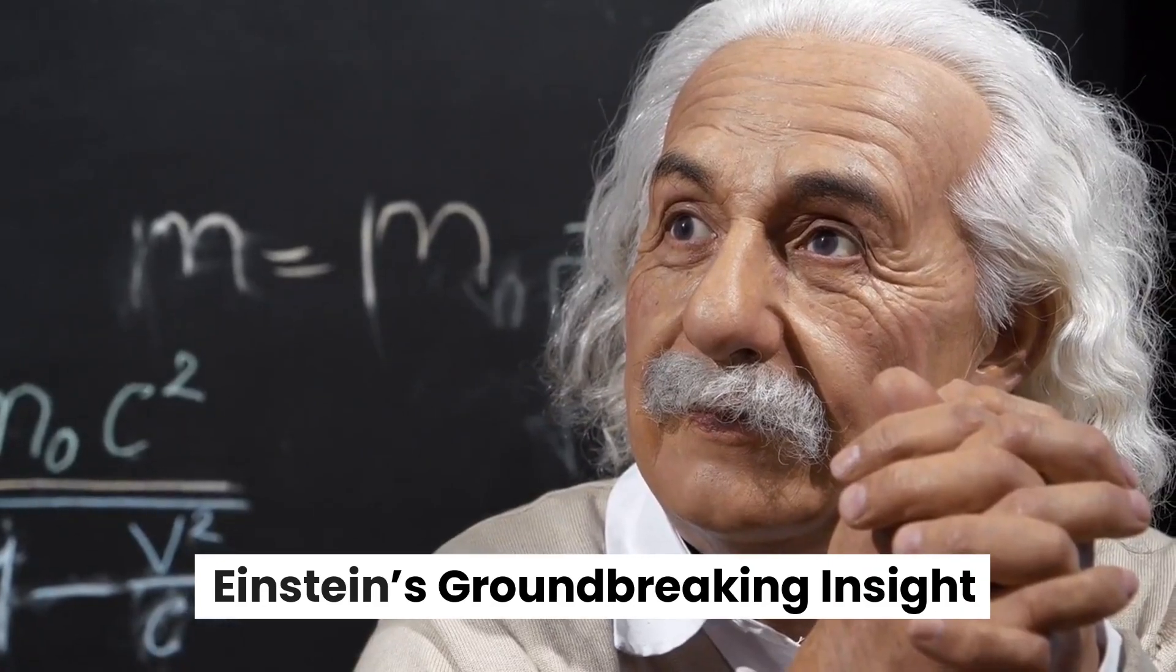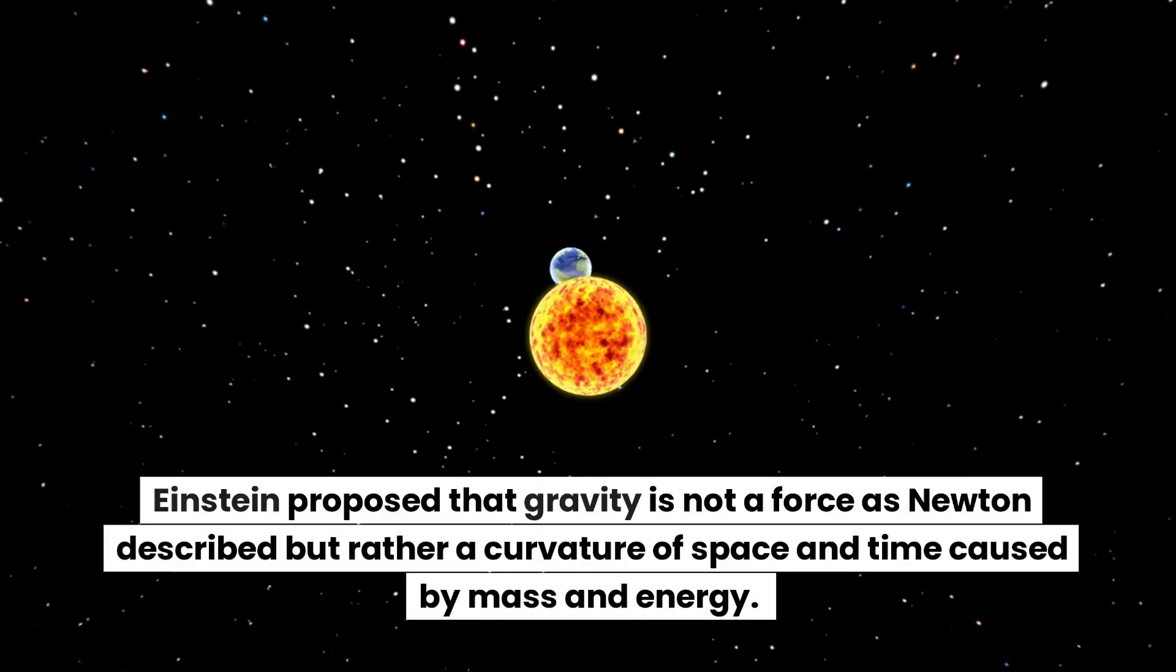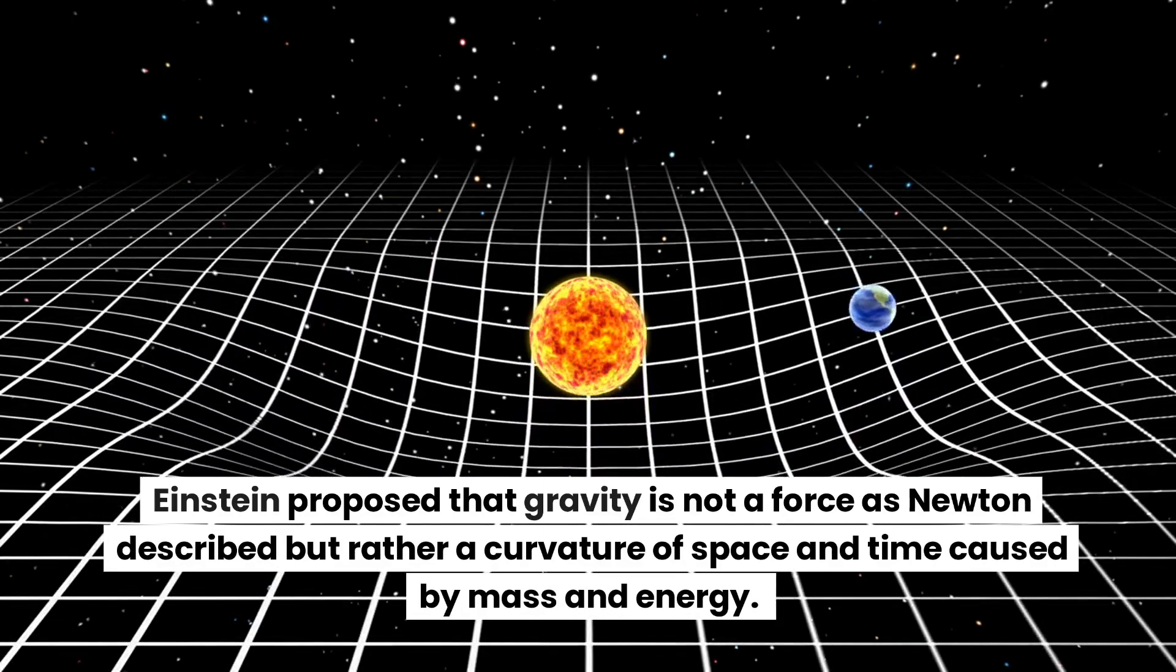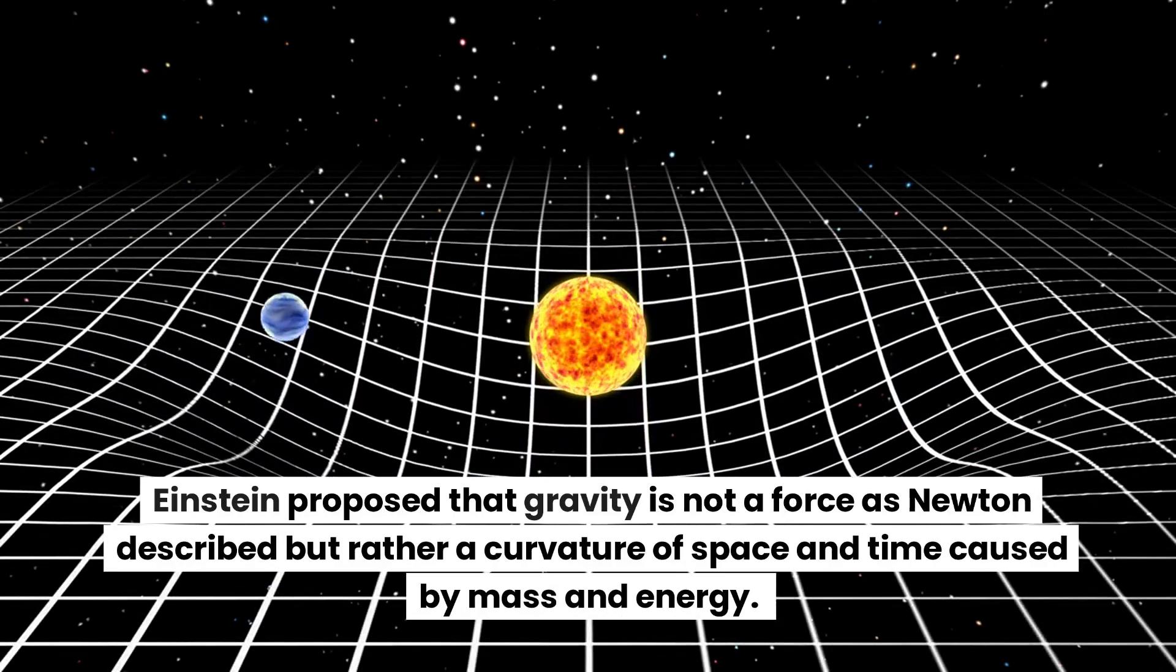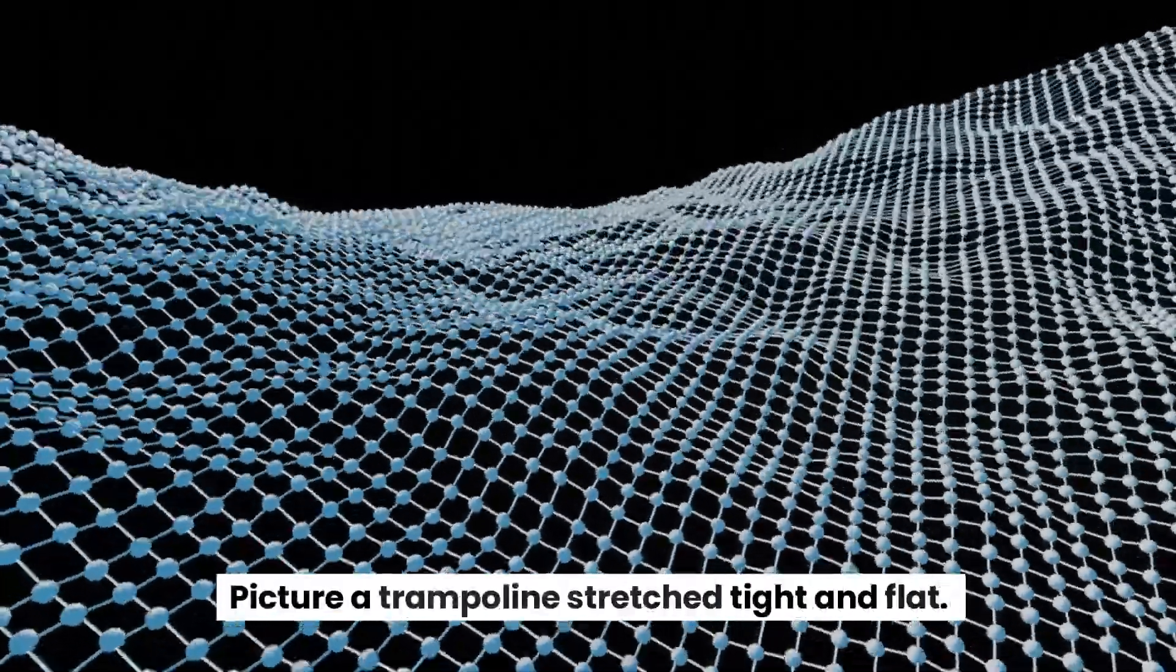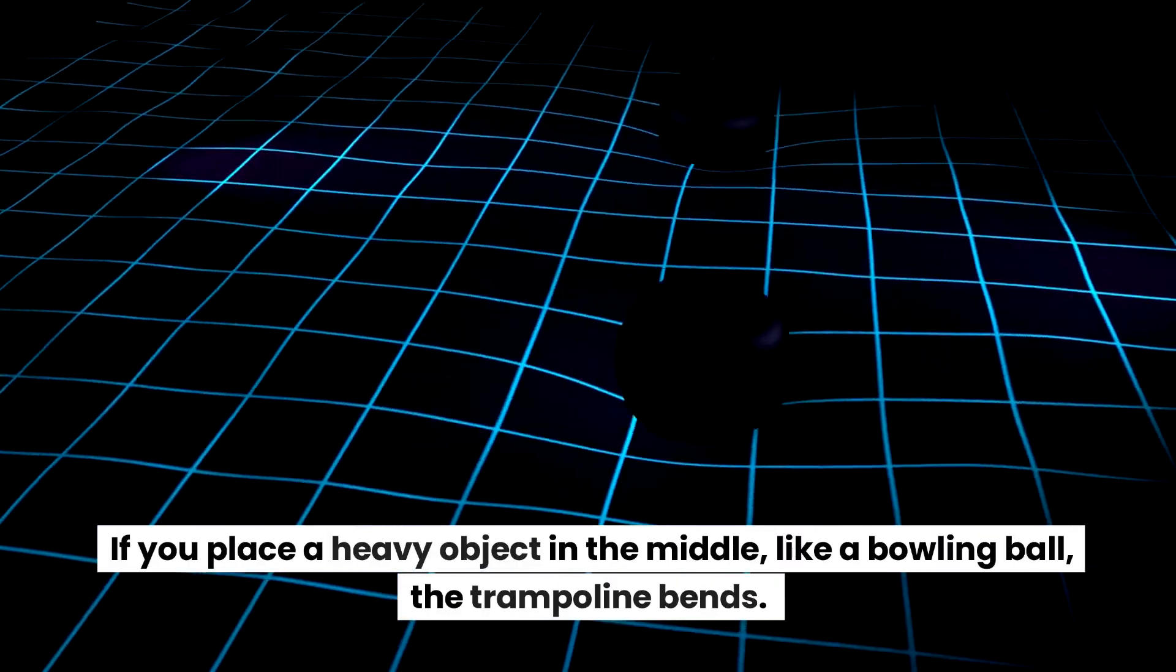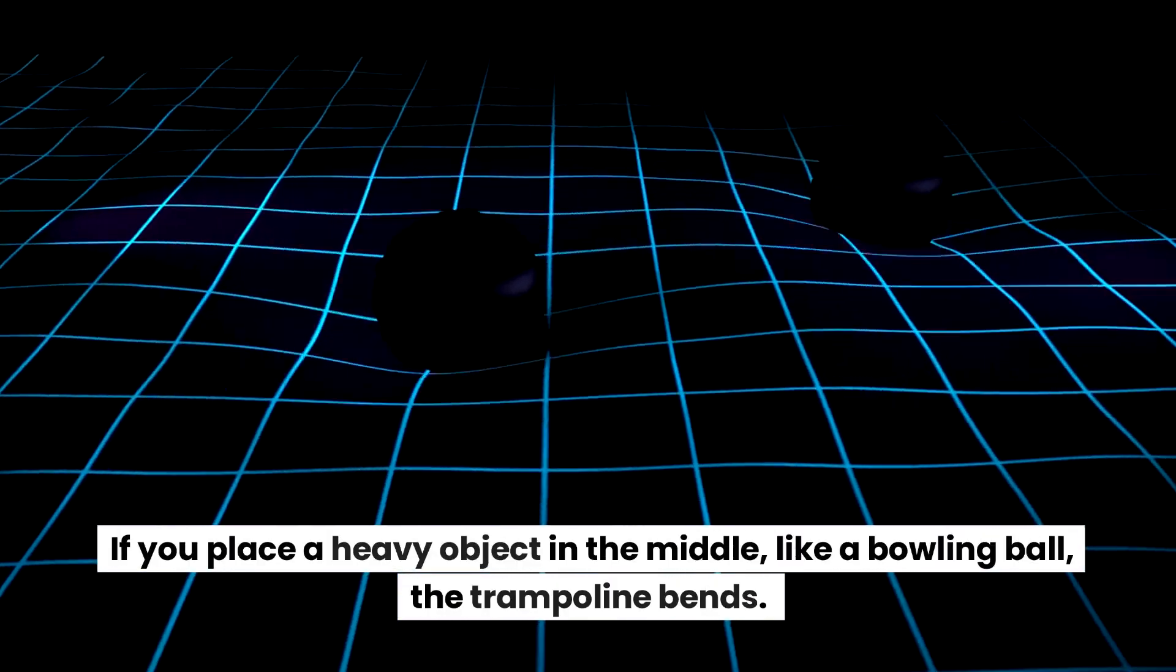Einstein's Groundbreaking Insight. Einstein proposed that gravity is not a force as Newton described, but rather a curvature of space and time caused by mass and energy. Picture a trampoline stretched tight and flat. If you place a heavy object in the middle, like a bowling ball, the trampoline bends.